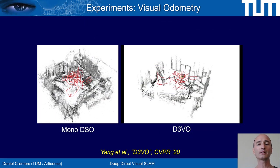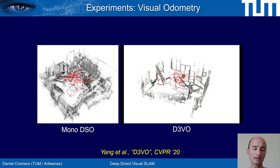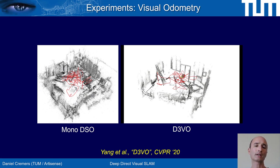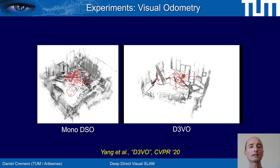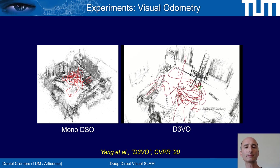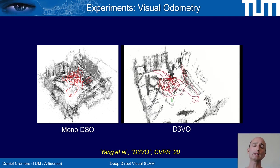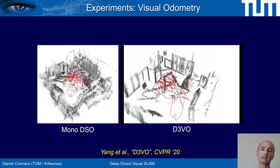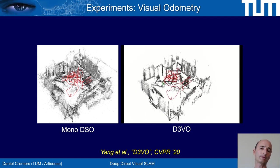On a difficult sequence from EuRoC, the monocular approach DSO shows very noisy reconstructions because the trajectory is inaccurate. In contrast, D3VO shows a fairly crisp and sharp reconstruction because of the significant boost in odometry precision.